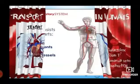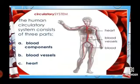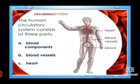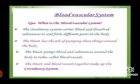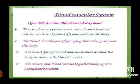The circulatory system of human beings consists of three parts: blood components, blood vessels, and heart. The circulatory system carries blood and vital substances to different parts of the body. The heart has the job of pumping these things around the body in tubes called blood vessels. So the heart and blood vessels together make up the circulatory system.